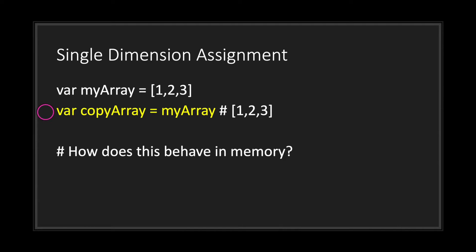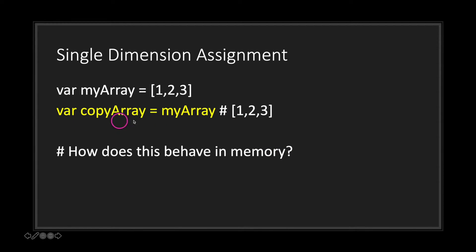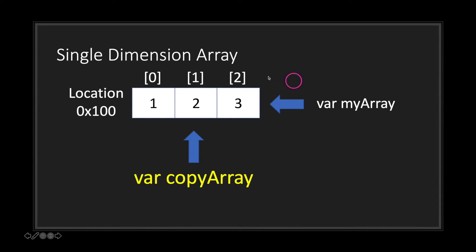Now let's take a look at what happens when we try to assign the variable my array into a different variable. Our new variable copy array will be assigned the values from my array. When we print this out using the print statement it will return 1, 2, and 3 — same thing for copy array. But when you assign an array to another variable, copy array actually references the same array in memory location as my array. To keep things simple: when you do a direct assignment such as copy array equals my array — without using a duplicate function — what you're really doing is saying wherever my array is referencing, in this case location 100, assign that reference location to copy array.